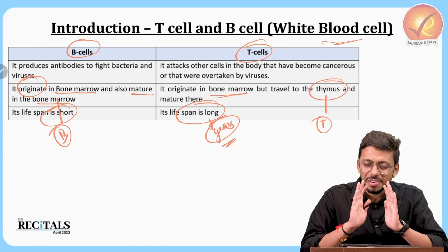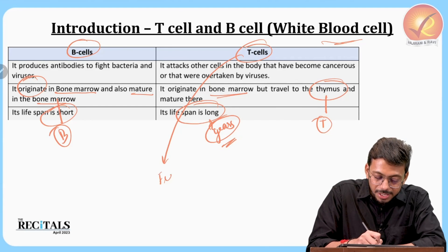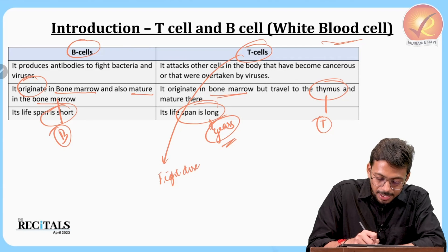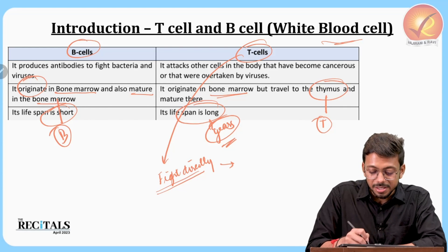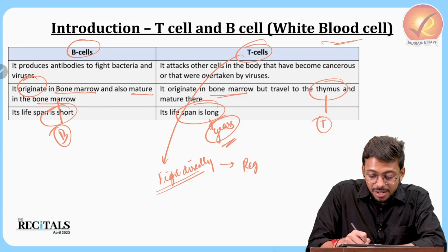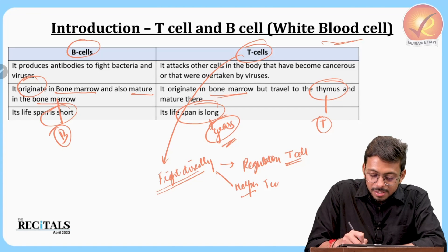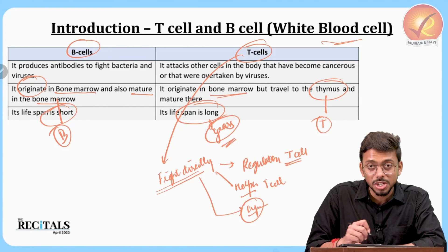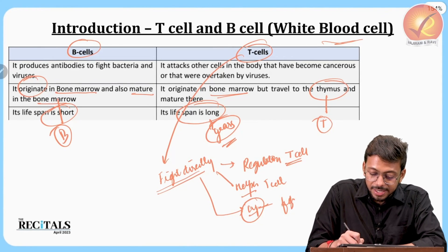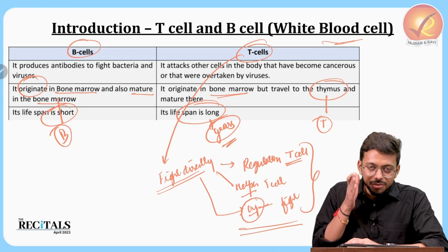T-cells fight directly against threats. There are regulatory T-cells which regulate the immune response, helper T-cells which help in strategizing, and cytotoxic T-cells which fight directly. So T-cells are like soldiers — they will strategize, fight, and regulate.